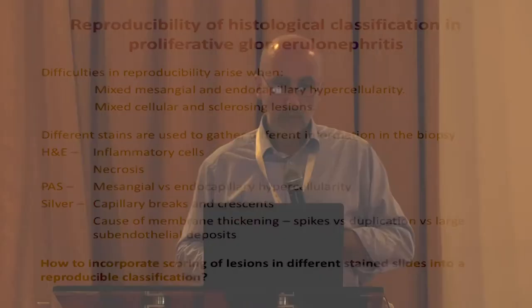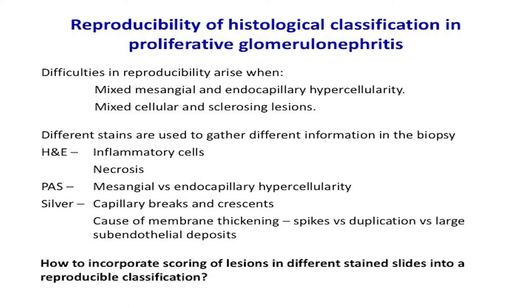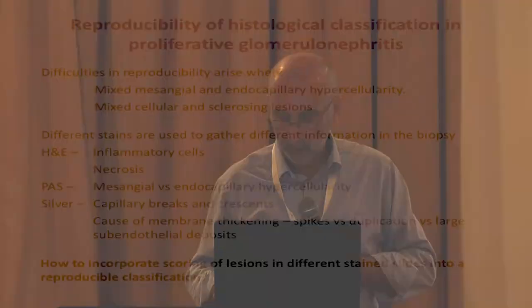We can't say to pathologists: just look at one slide, and that will give you the information you need to classify that biopsy. They have to look at multiple slides and multiple stains. In terms of the patient cohort, the cohorts have got to be large enough and sufficiently powered to provide the evidence on which to base a classification, with sufficient numbers of patients reaching an end point. The inclusion and exclusion criteria will have a major impact on the final conclusions, and what I'm going to do now is take you through the development of a truly evidence-based classification.